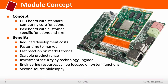The form factor — in this case it's Q7 — is standardized and it's exchangeable. This reduces the development costs because you can utilize a complete module which is already completely tested, ready to be operated, and you can focus on developing the carrier board.